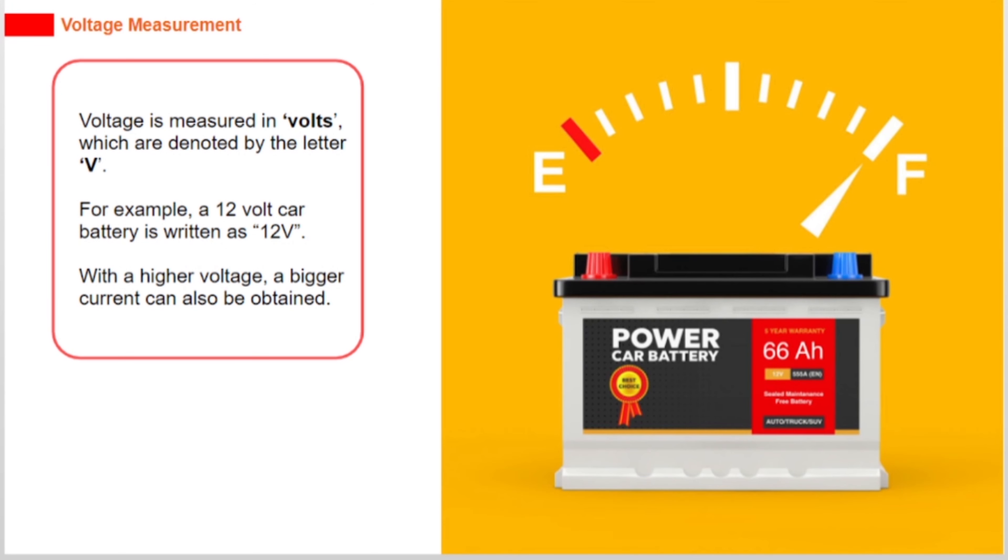Voltage is measured in volts, which are denoted by the letter V. For example, a 12 volt car battery is written as 12V.